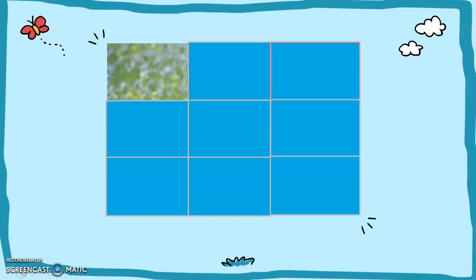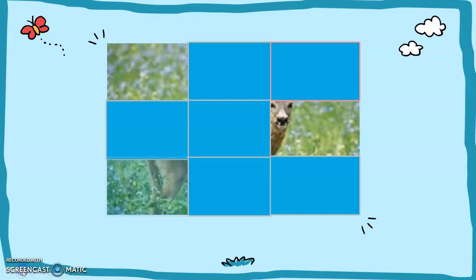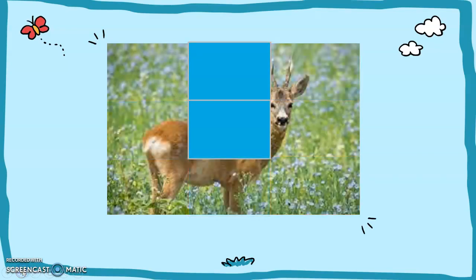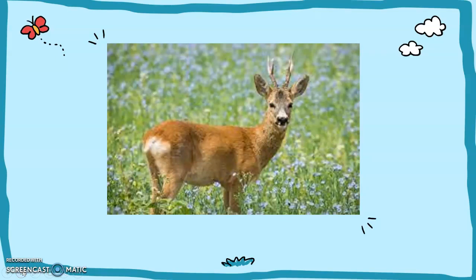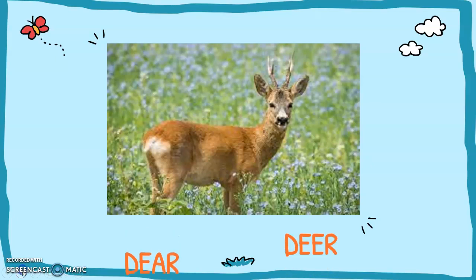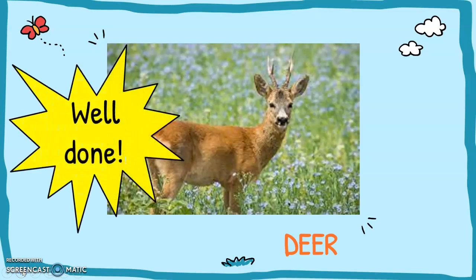Here's another. Oh, I bet you get there quickly — this is an easy one. It's a deer. But how do we spell this type of deer, the animal? Is it D-E-A-R or D-E-E-R? That's right, it's D-E-E-R. The other one is when we're writing a letter, 'dear'. Well done, guys.